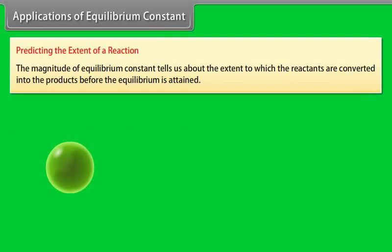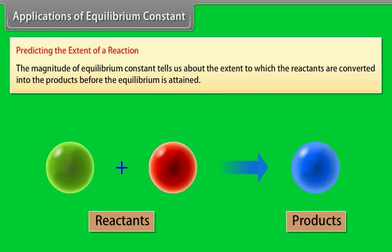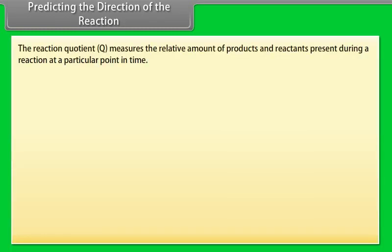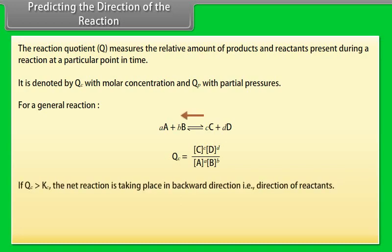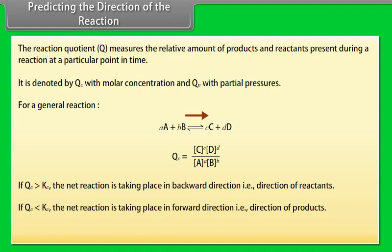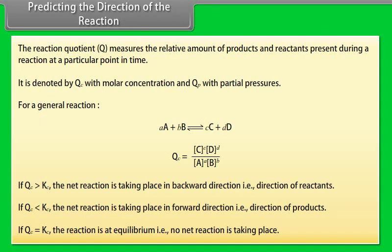Predicting the extent of a reaction: The magnitude of the equilibrium constant tells us about the extent to which the reactants are converted into products before equilibrium is attained. Predicting the direction of the reaction: The reaction quotient Q measures the relative amount of products and reactants present during a reaction at a particular point in time — denoted by Qc with molar concentrations and Qp with partial pressures. If Qc > Kc, the net reaction proceeds in the backward direction. If Qc < Kc, the net reaction proceeds in the forward direction. If Qc = Kc, the reaction is at equilibrium and no net reaction is taking place.